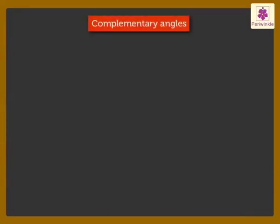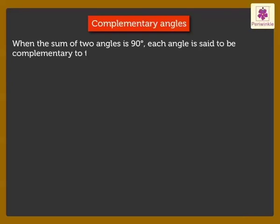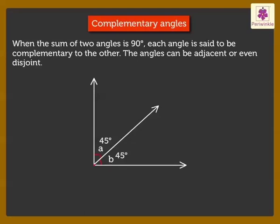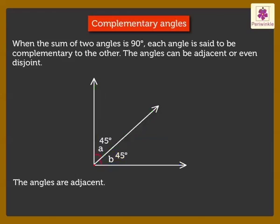Coming to complementary angles: when the sum of two angles is 90 degrees, each angle is said to be complementary to the other. The angles can be adjacent or even disjoint. Look at figure 1 — here, the angles are adjacent. Angle A is equal to 45 degrees and Angle B is equal to 45 degrees. On adding the measures of Angle A and Angle B, we get the sum as 90 degrees.